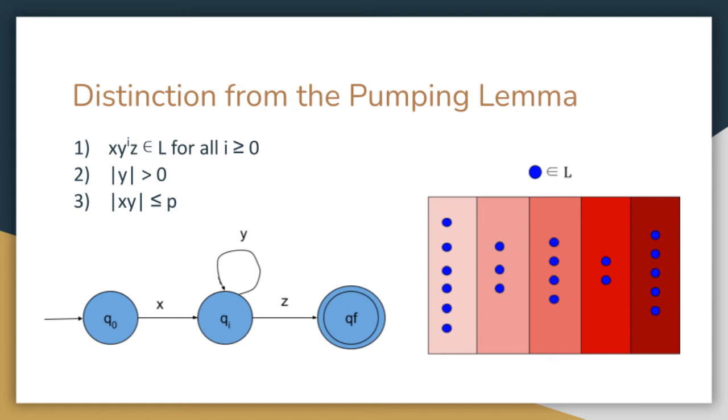This can be significantly more challenging than using the Myhill-Nerode theorem since the correct string must be chosen in order to achieve a proof by contradiction.